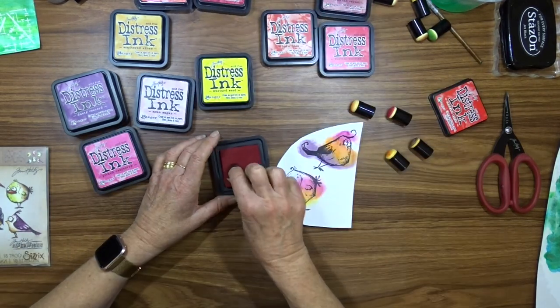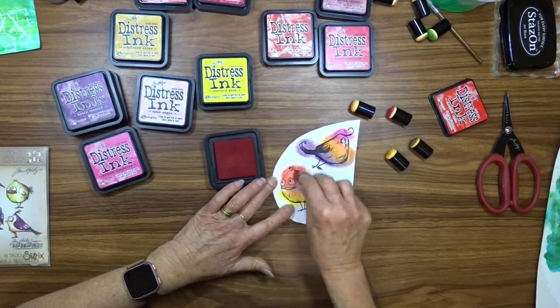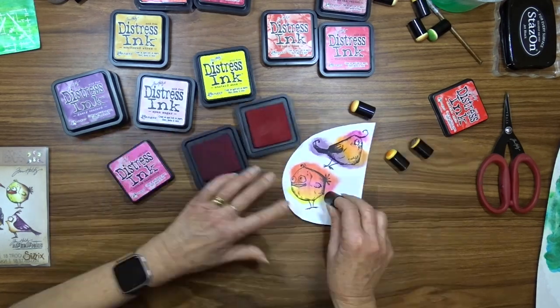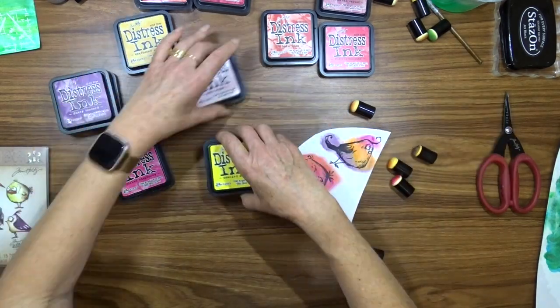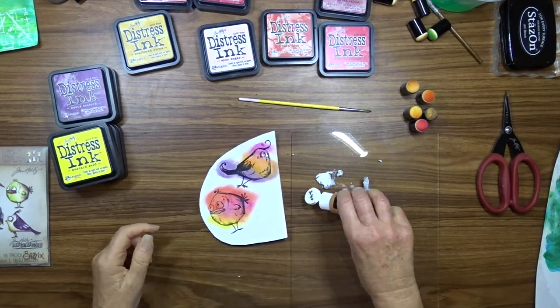I apply one area then the next area and then come back with the previous color and blend the two colors together. I do this for both birds.